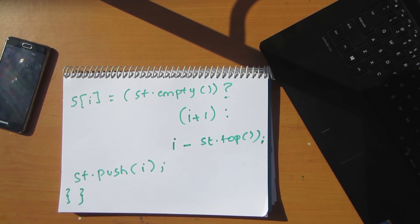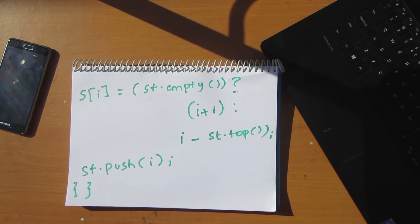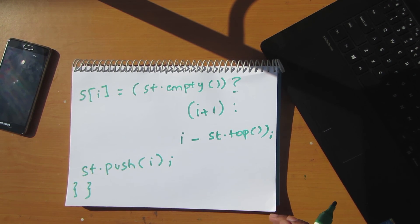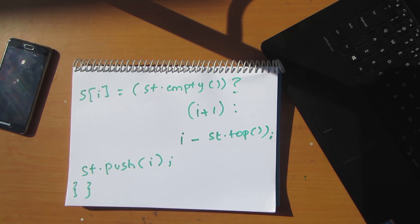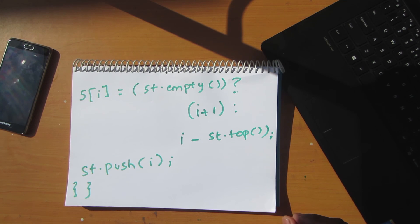That's the algorithm for finding the stock span for each stock price — just a few lines of code using the stack data structure. There are many more usages of data structures we'll look at in further videos. See you in the next one!